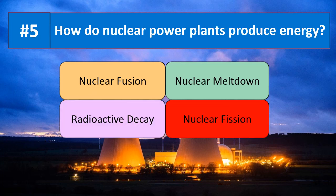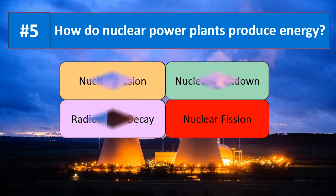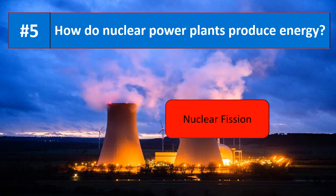Question number five: how do nuclear power plants produce energy? Is it due to nuclear fusion, nuclear meltdown, radioactive decay, or nuclear fission? The correct answer is nuclear fission — nuclear power plants produce energy by nuclear fission.